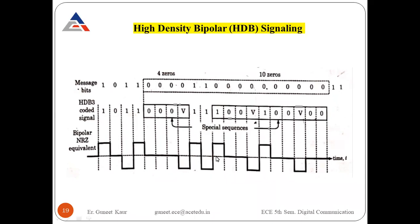For another group of four zeros, we use the 100V sequence. Here, one is drawn, then two zeros, then V — with V taking the negative polarity since the previous mark was positive. For the next group of four zeros, using 100V means if you have positive polarity, you draw the negative polarity next. In summary, when N+1 or the minimum number of zeros occur, they are replaced by a special binary sequence: either 000V or 100V.